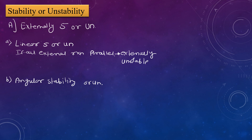For example, consider a simply supported beam with a roller support at the first end and a roller support at the second end. Both roller supports give vertical reactions, and both vertical reactions are parallel to each other. If you extend them, they remain parallel — so this structure is externally unstable.